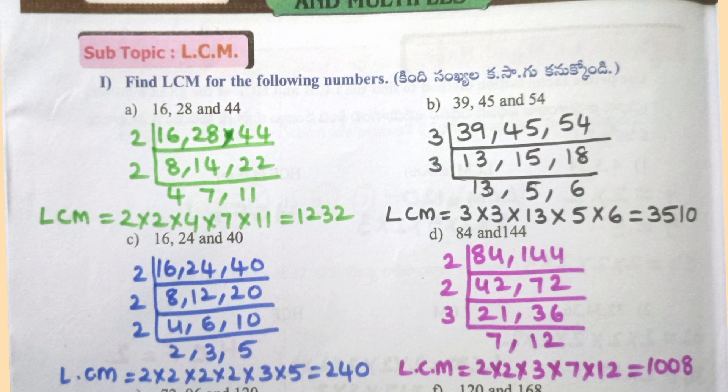Worksheet 18: Find the LCM for the following numbers. A: 16, 28 and 44 — LCM = 2×2×4×7×11 = 1232. B: 39, 45, 54 — LCM = 3×3×13×5×6 = 3510.